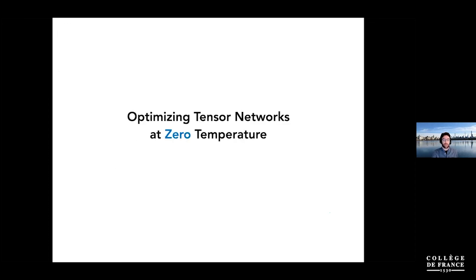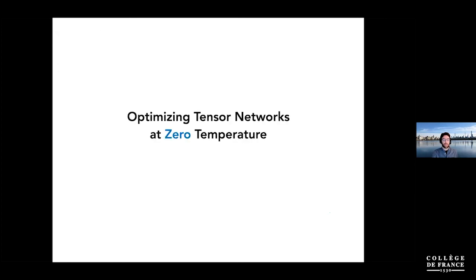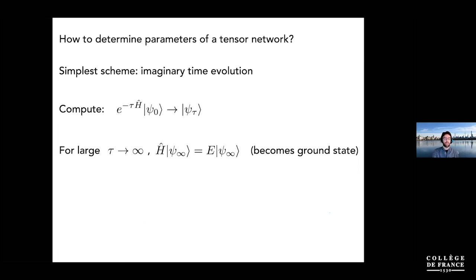How do we actually put the numbers into a tensor network? I'll talk briefly about two different ways. The first is the simplest to implement, and ties into the idea of using tensor networks at finite temperature where I'll conclude the talk. This is imaginary time evolution — a ground state projection method. You start with some initial state (it just needs to not be orthogonal to the ground state you're looking for) and exponentiate the Hamiltonian with an imaginary time parameter tau.